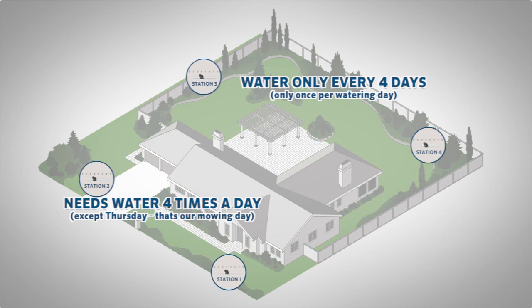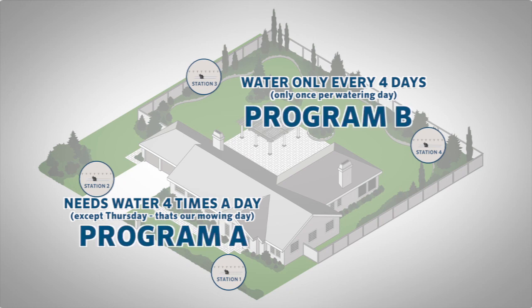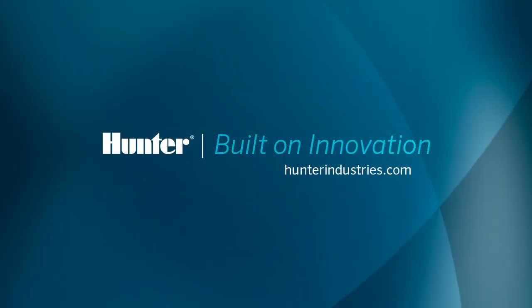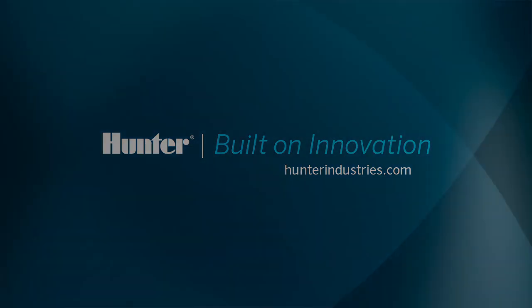Therefore, we'll need to divide these four stations into two different programs, A and B. Program A can have stations one and two with the new grass, and program B can have stations three and four with the trees.